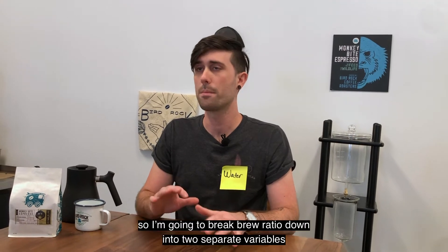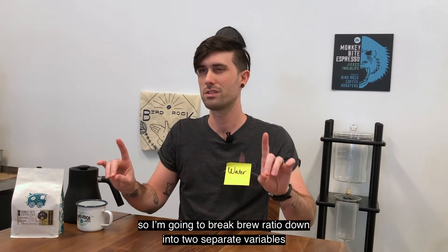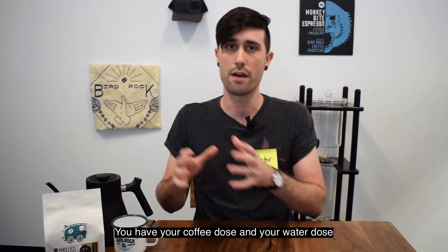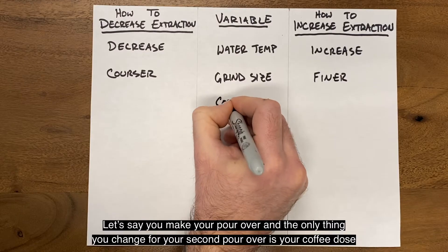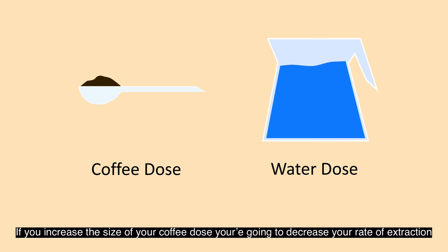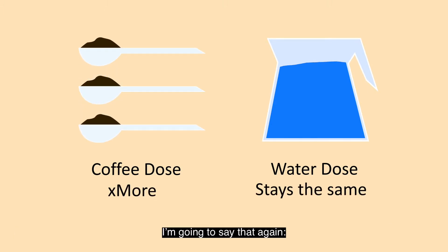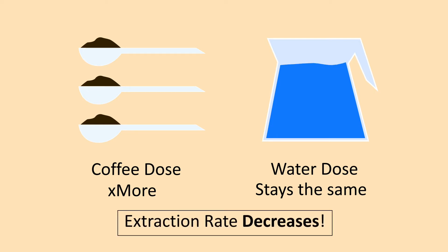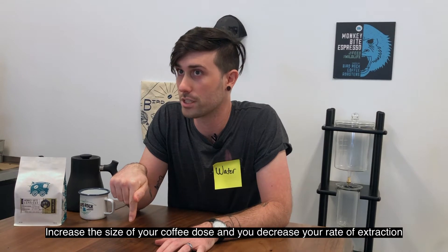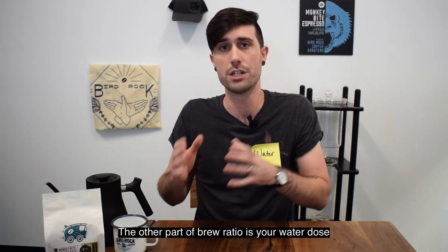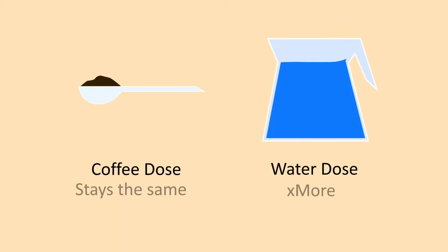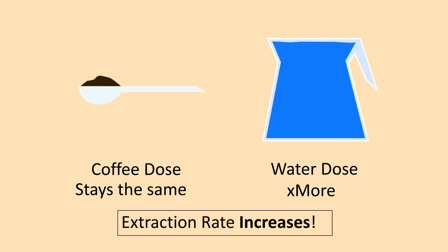Brew ratio is a tricky one, so I'm gonna break it down into two separate variables: your coffee dose and your water dose. If you increase the size of your coffee dose, you're gonna decrease your rate of extraction. Increase the coffee dose, you decrease extraction; reduce your coffee dose, you increase extraction. The other part of brew ratio is your water dose. If you increase the amount of water you use, you're going to increase your rate of extraction, and if you decrease the amount of water, you decrease that rate of extraction.